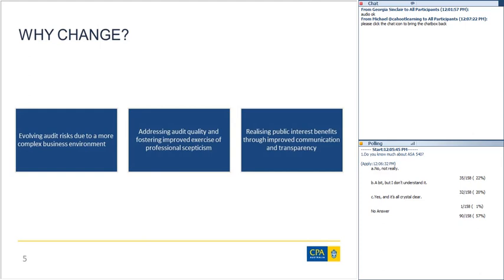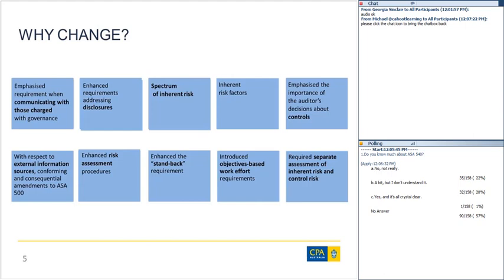ASIC's recent inspection report noted that in 24% of 347 key audit areas reviewed, auditors did not obtain reasonable assurance that the financial report was free of material misstatement. That does not mean the reports had a material misstatement — it just means auditors didn't have sufficient appropriate audit evidence on which to base their conclusions. Many of those findings related to auditing accounting estimates, and that is consistent from a worldwide perspective. There are very clear public interest needs driving the revision of the standard.